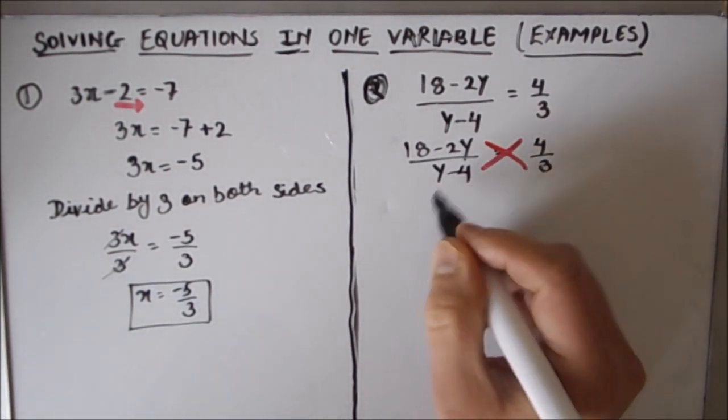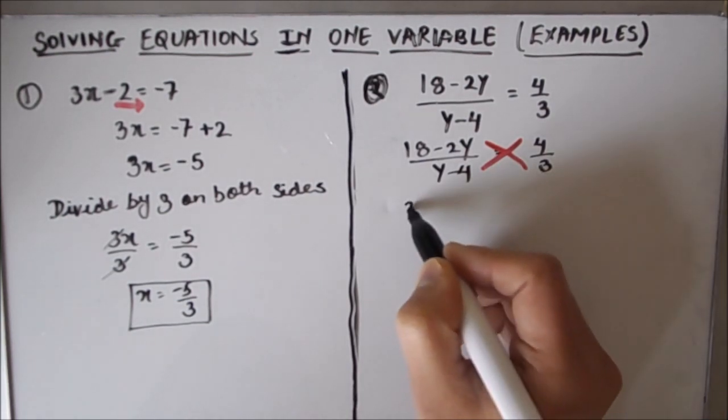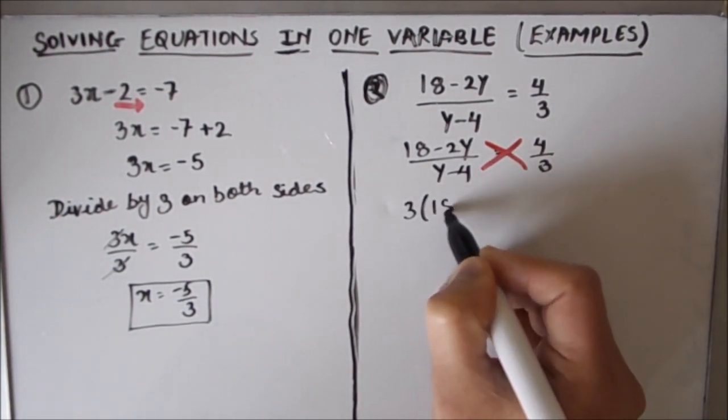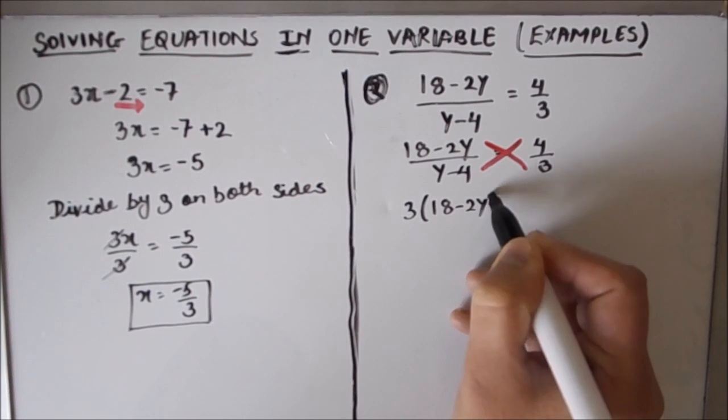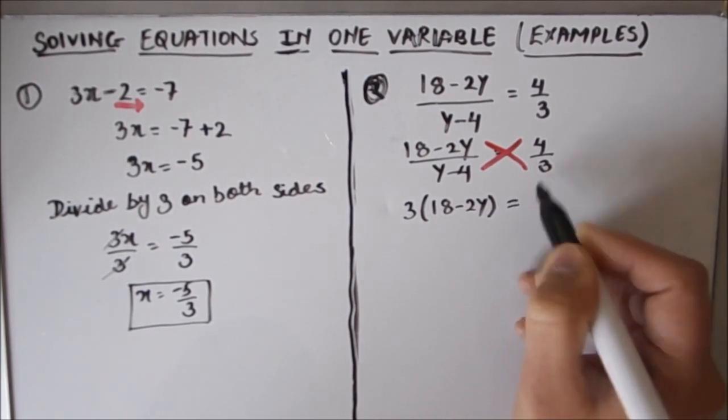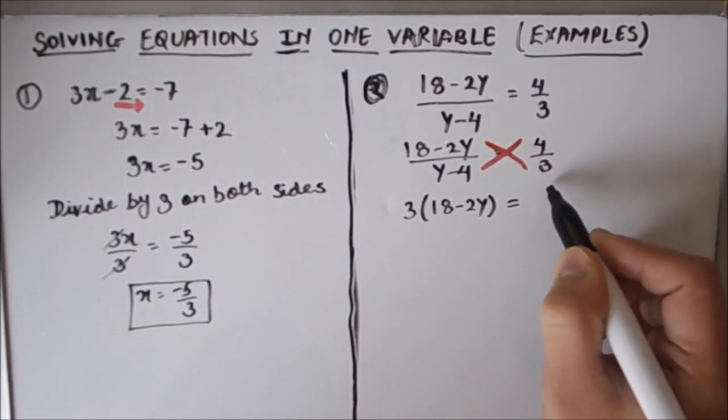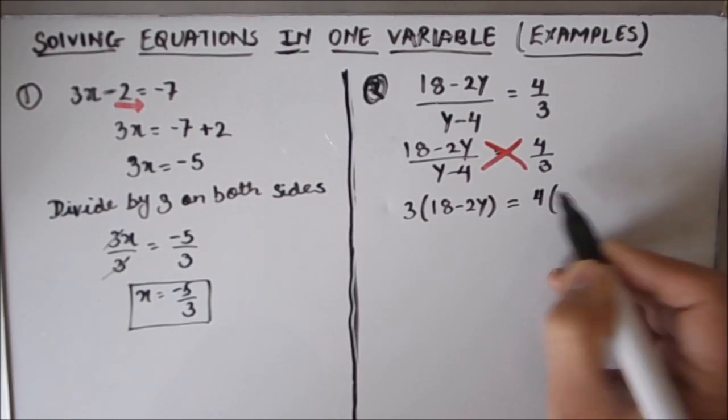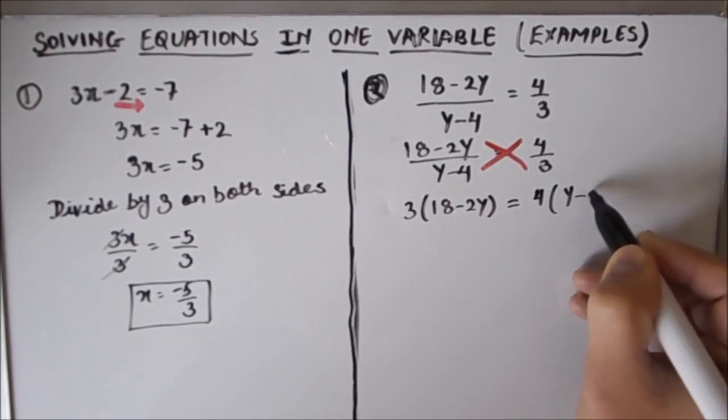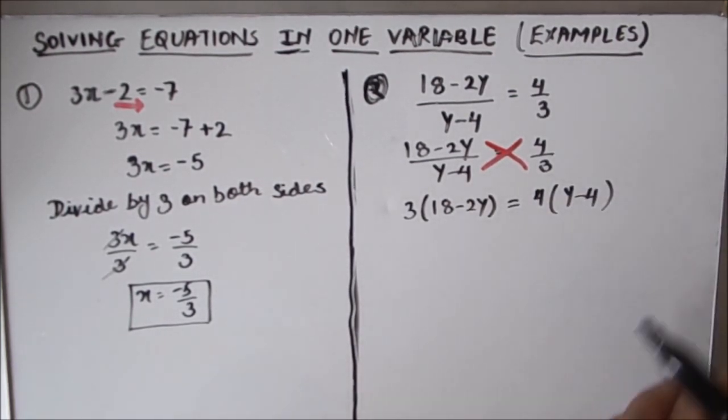By cross multiplying, this 3 gets multiplied to the term on the right, and 4 gets multiplied to the term on the denominator.